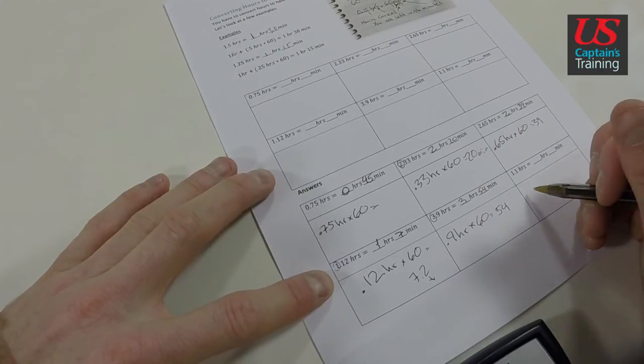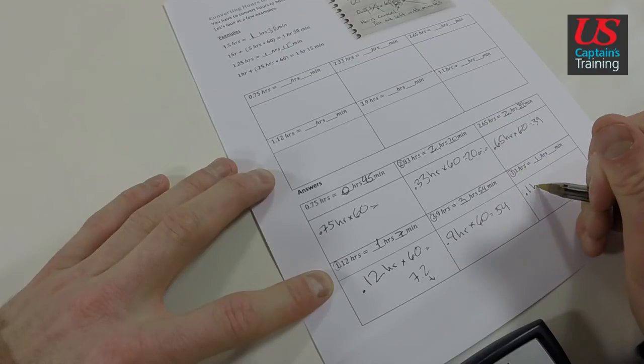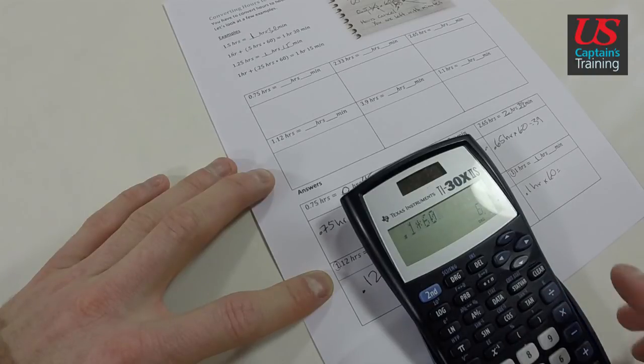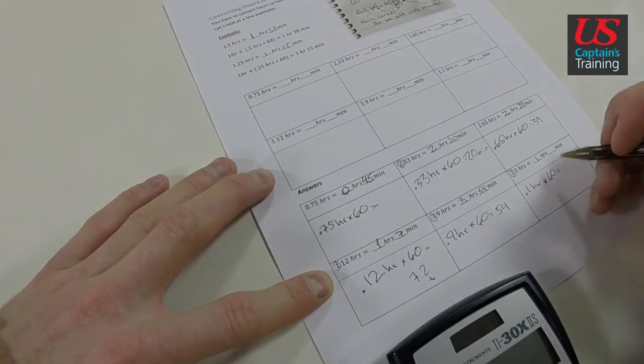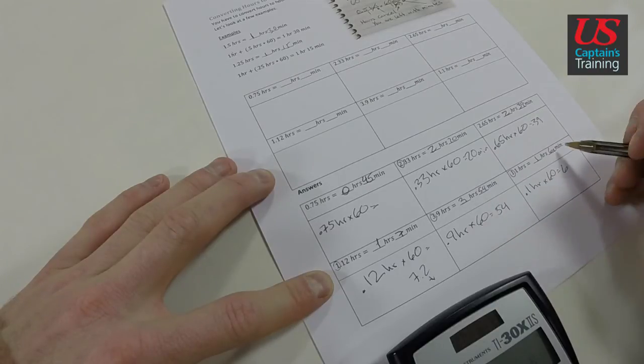And now 1.1 hours. This 1 hour is good - 1 hour. 0.1 hours times 60 equals 0.1 times 60 equals 6 minutes.